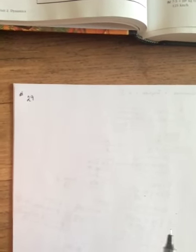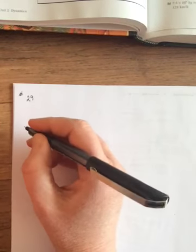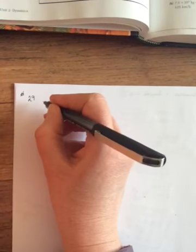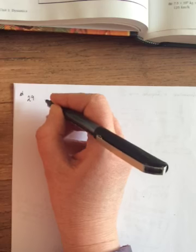Okay, so on page 197, question number 29 has four parts. All four of them want you to find the momentum of the objects.